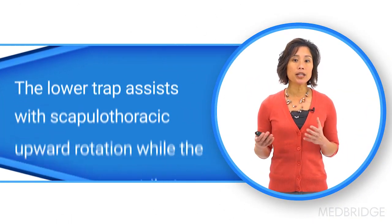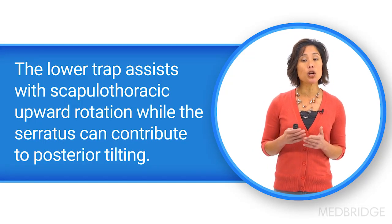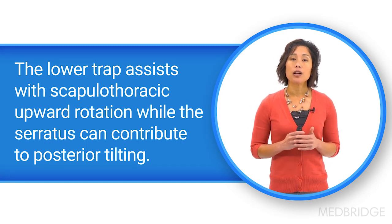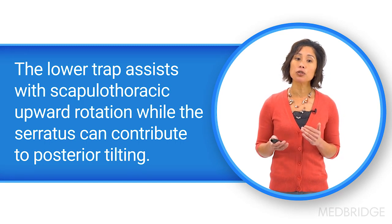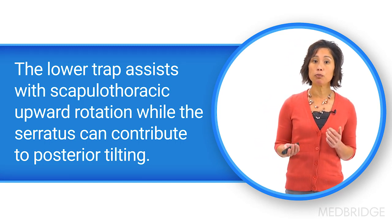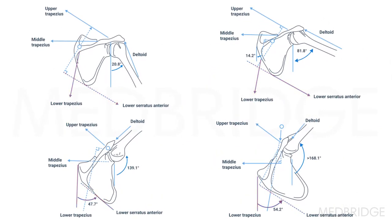The lower trap has a direct attachment to the scapula and has a line of pull to assist with scapulothoracic upward rotation at the AC joint. The serratus anterior has the largest moment arm for producing upward rotation and can also contribute to posterior tilting. The middle and lower trapezius generates external rotation of the scapula at the AC joint.